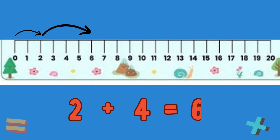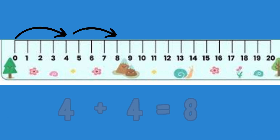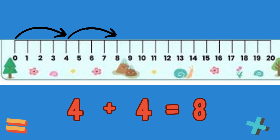Now we will use a number line to add. Count 2 on the number line, and then count 4 more numbers — you will reach number 6. 2 plus 4 is equal to 6. Count 4 on the number line, then count 4 more numbers — you will reach number 8. 4 plus 4 is equal to 8.